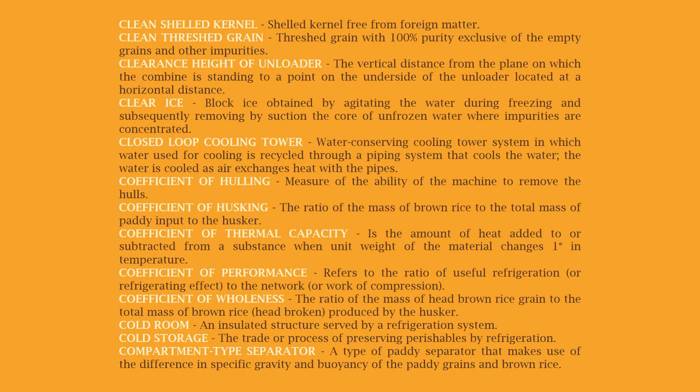Clearance height of unloader: the vertical distance from the plane on which the combine is standing to a point on the underside of the unloader located at a horizontal distance. Clear ice: block ice obtained by agitating the water during freezing and subsequently removing by suction the core of unfrozen water where impurities are concentrated. Closed loop cooling tower: a water-conserving cooling tower system in which water used for cooling is recycled through a piping system that cools the water as air exchanges heat with the pipes.